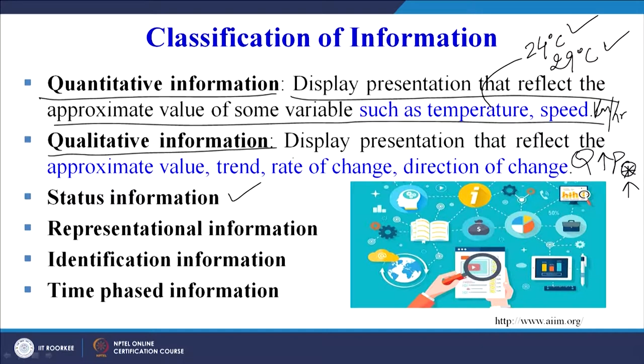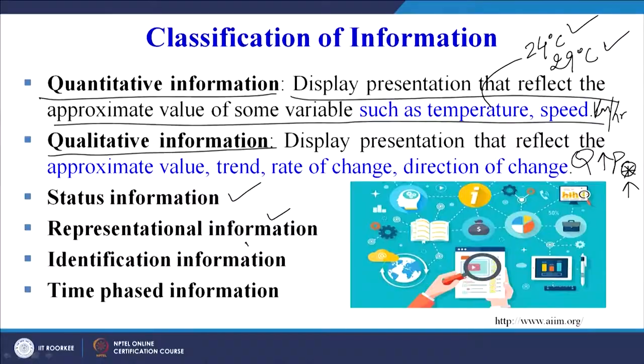There can also be status information — for example, train information showing whether a train is on time or delayed by how much. There can be representational information and identification information — for example, a passport contains all identification information. Time-phase information is also possible. In our context, the focus will be on information that can be displayed on the shop floor.